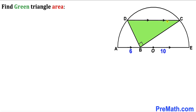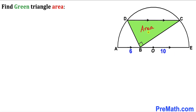Welcome to Premag. In this video we have got this chord CD that is parallel to this diameter of this semicircle with center O, as you can see in this diagram. Moreover, this green right triangle BCD is confined between them. Furthermore, segment AB is 6 units whereas segment BE is 10, and our task is to calculate the area of this green triangle.